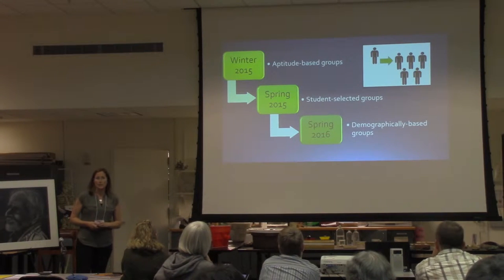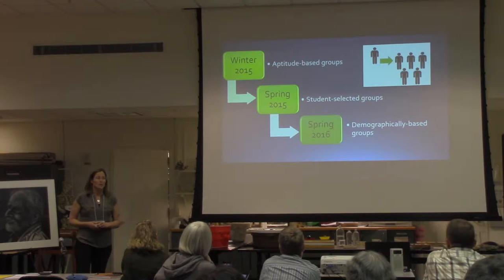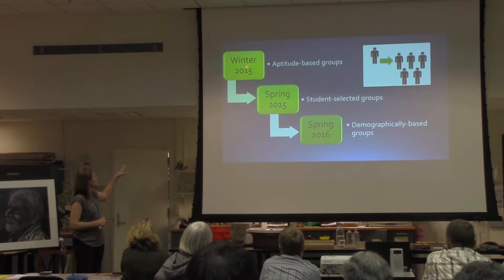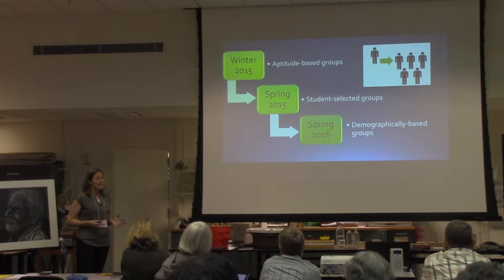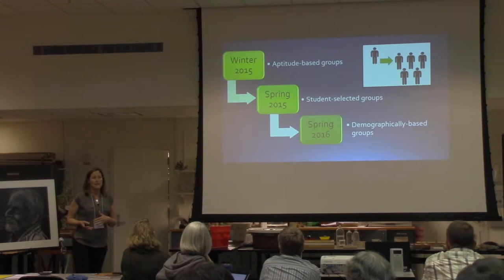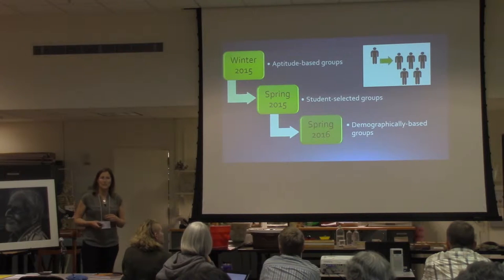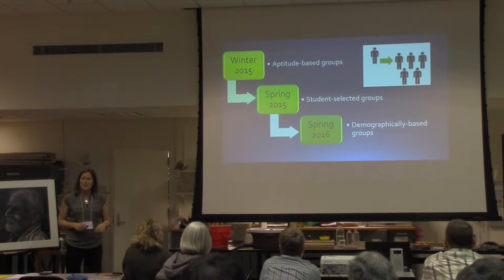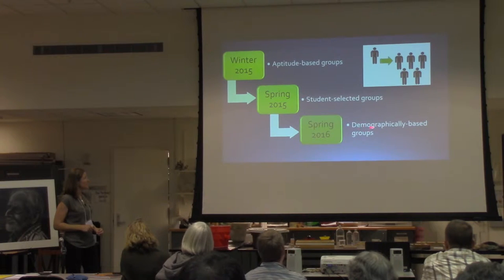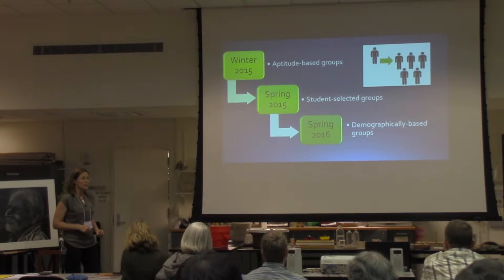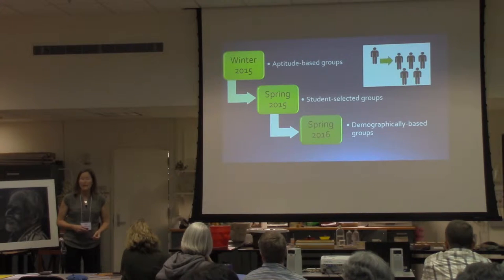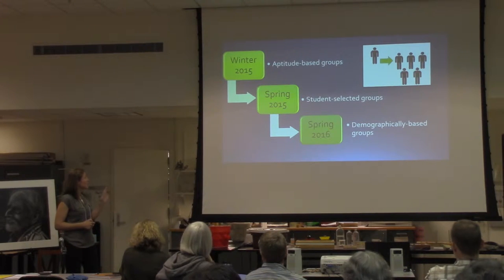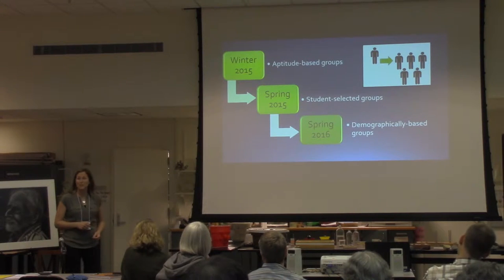We've done three iterations of this group study, and it's ongoing this quarter as well. In the first iteration last winter, we classified students as low, high, and mid aptitude and put them in like and mixed ability groups. In spring 2015, we allowed students to self-select. This quarter, we surveyed for demographic variables and placed them into groups based on those criteria. The methods of assessment are similar across all three, so I'll walk through the aptitude-based groups as an example.